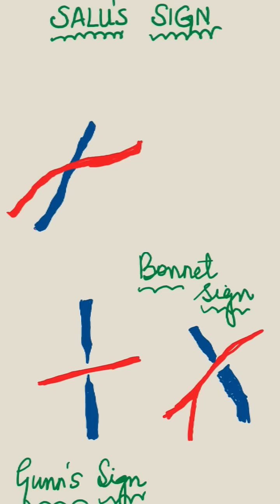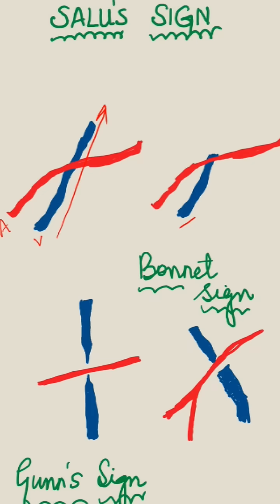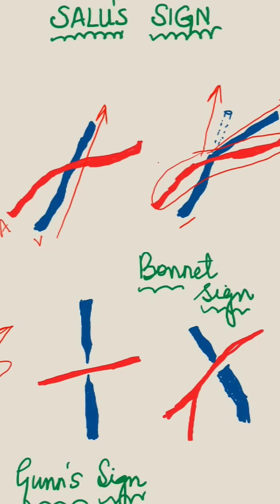Normally, the vein follows its path freely alongside the artery. However, when the artery is thickened and passes over the vein, the vein gets deflected rather than passing straight. This deflection of the vein, which occurs because of the passage of a thickened artery on top of it, is referred to as the Salus sign.